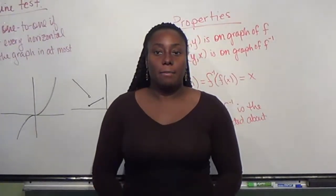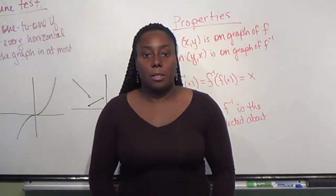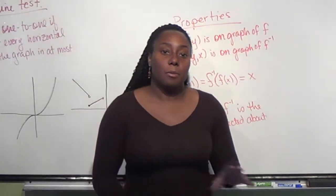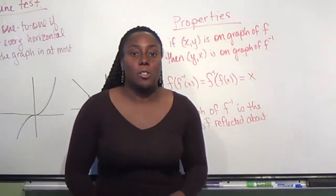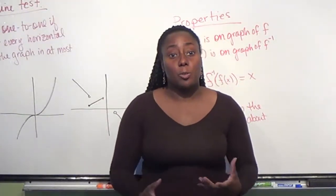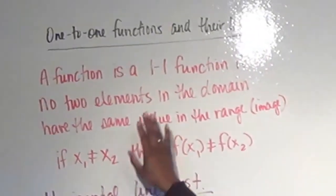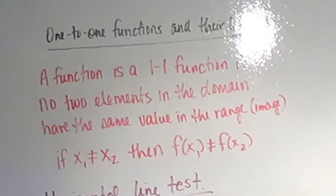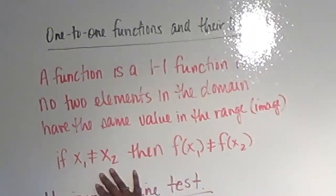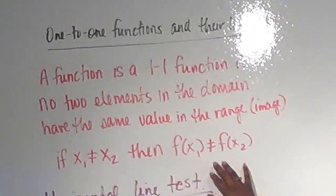In this section we're going to look at functions and their inverses. Before we can talk about inverses, we need to talk about whether a function is one-to-one or not. A function is one-to-one if no two elements in the domain have the same value in the range or image. So if x1 and x2 are different, then f of x1 and f of x2 must be different.